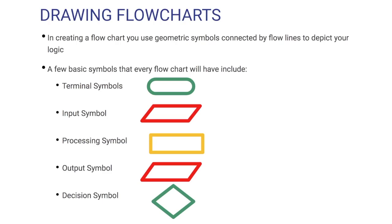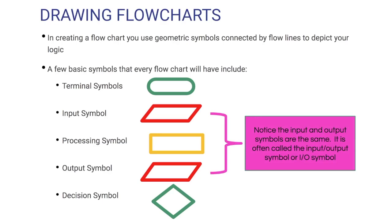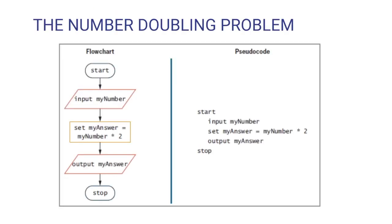When it comes to flowcharts, you can express the same logic, but you've got to know the symbols. In a flowchart we have a few basic symbols: an oval for terminal symbols like start and stop, a parallelogram for input, a rectangle for processing, another parallelogram for output, and a diamond for a decision symbol. The input and output symbols are identical — we refer to them as the same sort of IO device. Here's the pseudocode for the number doubling problem directly next to the flowchart. We start with a terminal symbol, input goes in a parallelogram, then a process rectangle for 'set my answer equal to my number times two,' then output in a parallelogram, followed by the terminal symbol. Everything flows from one piece to the next so we can see the logical progression.